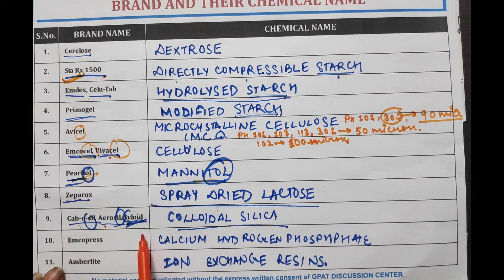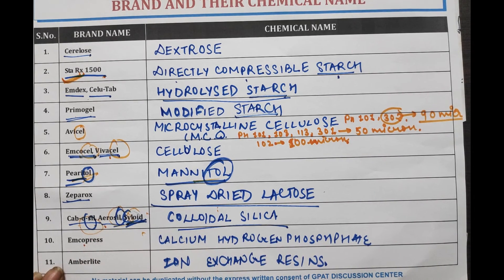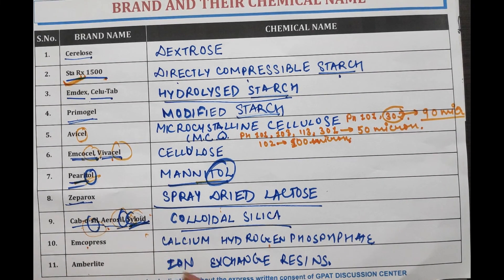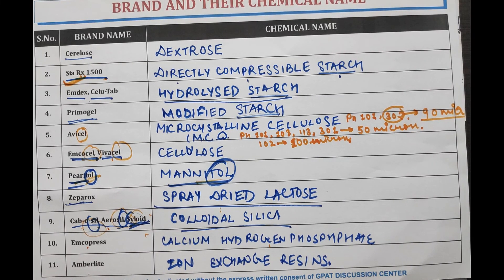Cabosil, Aerosil, Siloid — Colloidal Silica; note the 'sil' in each name. M-Compress — Calcium Hydrogen Phosphate. Amberlite — ion exchange resins. Today in this video we have discussed the brand names and their chemical names of diluents and super disintegrants used in tablets, along with small tricks to remember them. Thanks for watching.